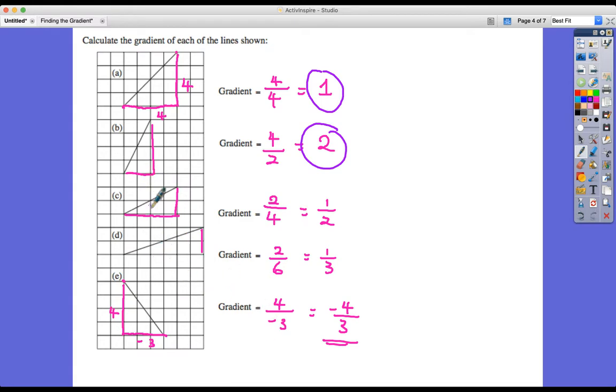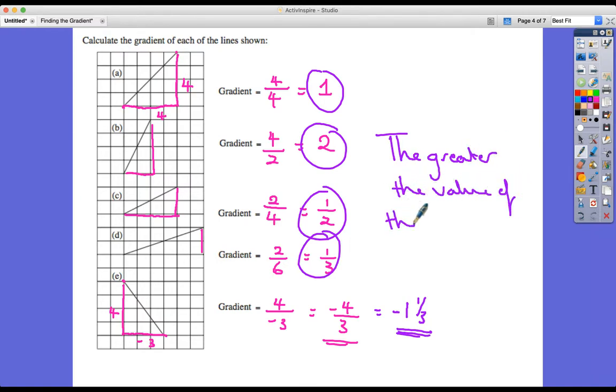This one actually is slightly steeper than the 1 because this is actually minus 1 and one third. It's going in a negative direction, so it's between these two. It's not quite as steep as 2, it's not as high in the negative values as minus 2, but it is steeper than the 1 in the negative direction. So what I'm getting at here is that the higher or the greater the value of the gradient, the steeper the line.